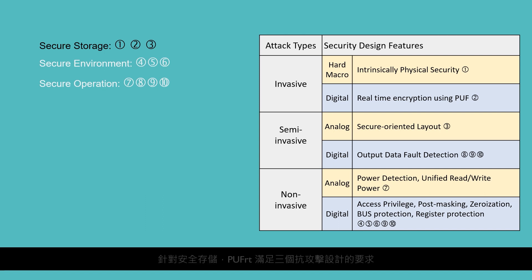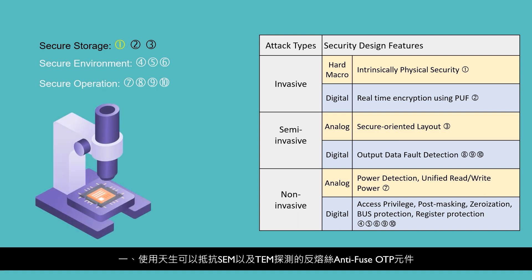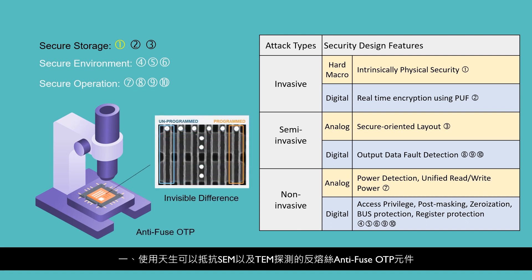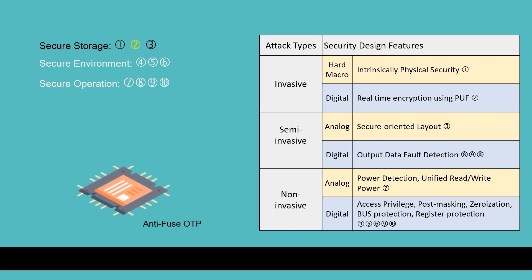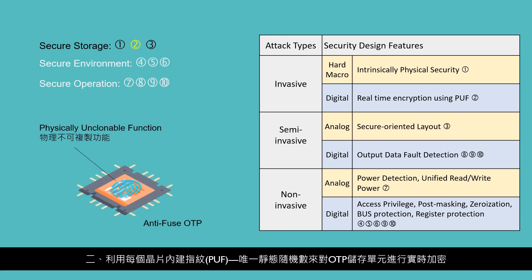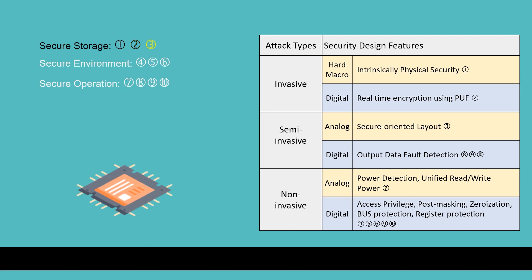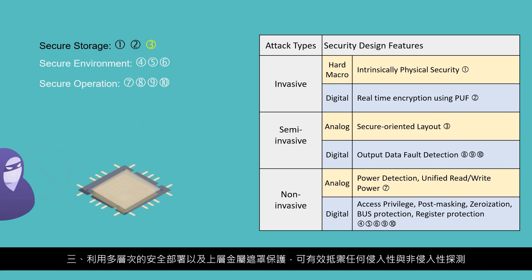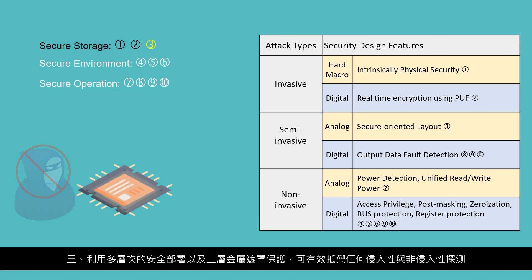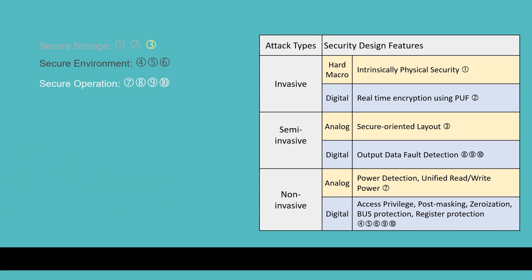The relevant anti-tampering features are categorized according to the three aspects mentioned. For secure storage, PuffRT meets three criteria. First, PuffRT has components such as anti-fuse OTP, which is inherently resistant to SEM and TEM probes. Second, PuffRT uses the unique static random number of each chip's built-in fingerprint to encrypt data in real time, then stored into OTP. Third, PuffRT has multi-level security-oriented layout and top metal shielding to effectively prevent any possible invasive and non-invasive probes.